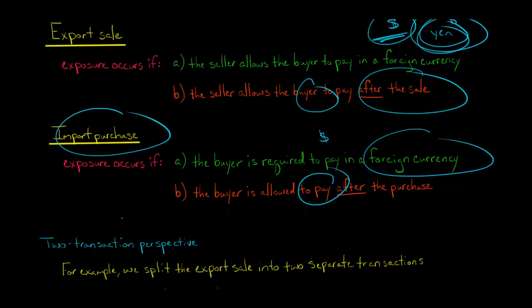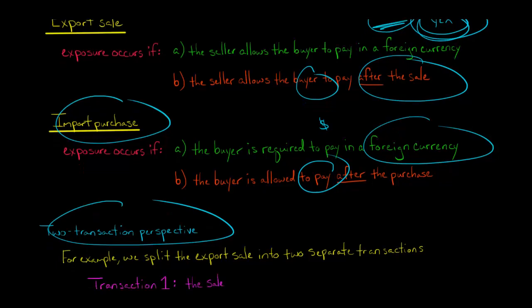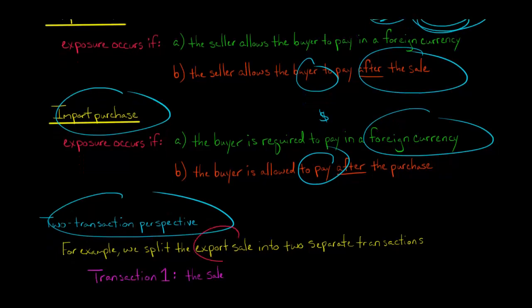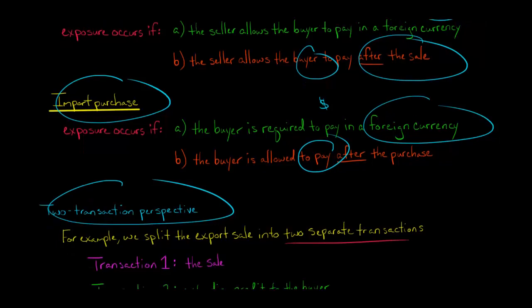So the way we're going to account for this, we're going to use something called the two-transaction perspective. And what that means is this. So let's take the export sale, where we're selling product to a company in another country, and they're going to pay us in a foreign currency.